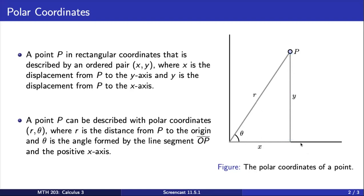That same point P can be described by r and θ, where r is the length of the line segment from the origin to P. θ is the angle that this line segment makes with the positive x-axis.